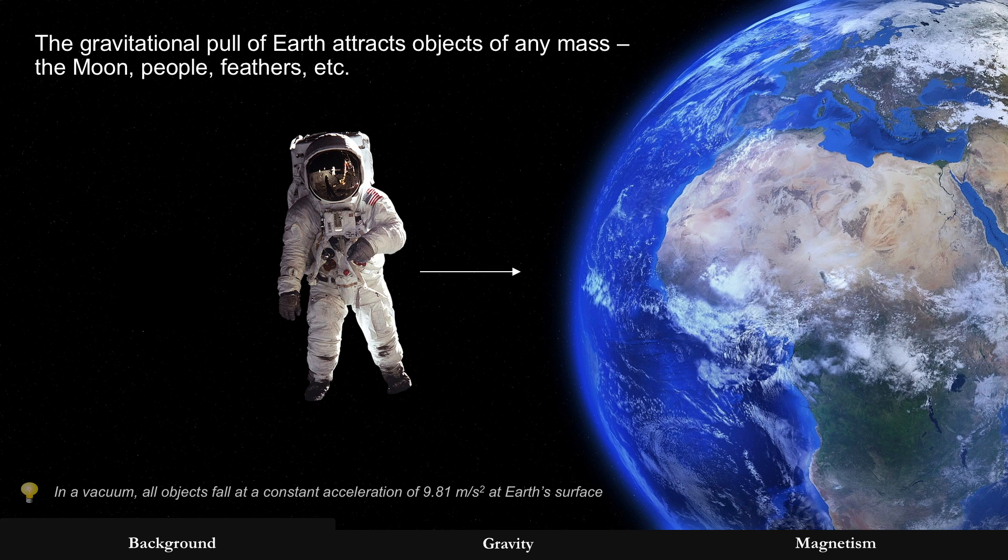So gravity is a force that can attract objects of any mass. The moon was shown on the earlier page. People are standing on the earth right now because of gravity. Even light things like feathers, and at least in a vacuum, all of those objects are going to fall at a constant rate. At our surface, that's 9.81 meters per second squared.